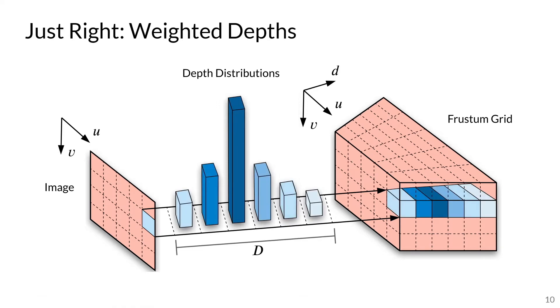Just like Goldilocks, our work takes a just-right approach. We project pixels to all possible depths, but weigh the projection by the estimated depth probabilities. Doing so allows our network to place image information at the correct locations, while encoding depth estimation uncertainty.